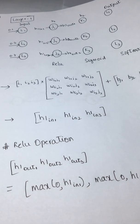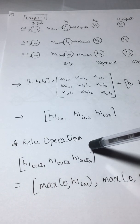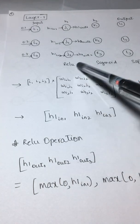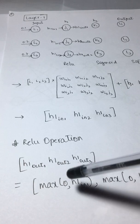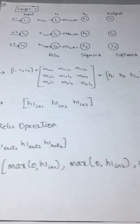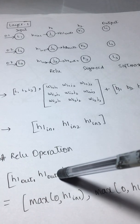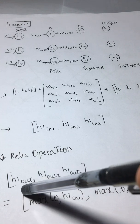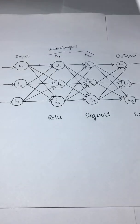After you get these values, you pass them through your activation function. The activation function for the first layer is ReLU. You basically take the maximum of those values. The values you get from the output of the activation function are output1, output2, and output3. This completes the first layer forward pass.